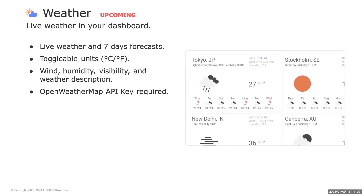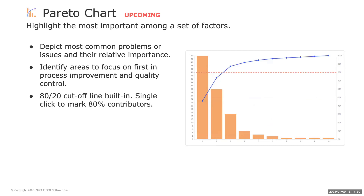New visualizations are coming soon. The weather visualization will provide live weather information and a seven-day forecast for one or multiple locations, using the OpenWeatherMap service — coming soon on the TIBCO Community Exchange. Also coming soon is the Pareto chart, to quickly highlight the most important issues or contributors among a set of categories — useful for process improvements and quality controls. This visualization was developed by a team of students in Sweden.